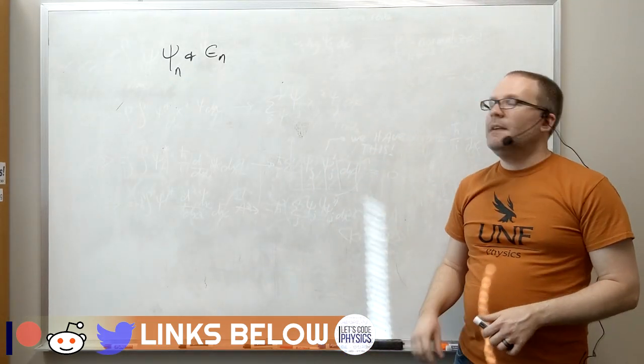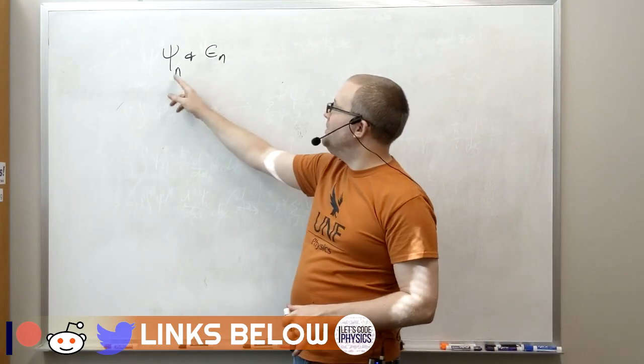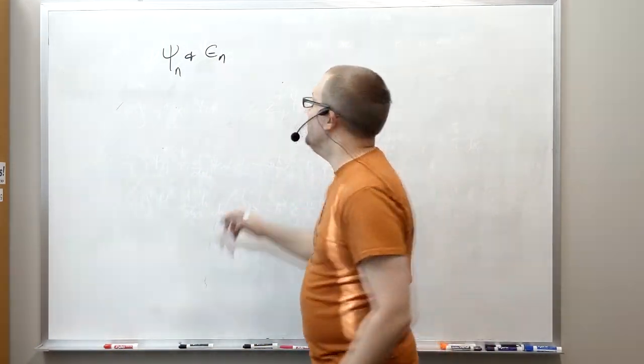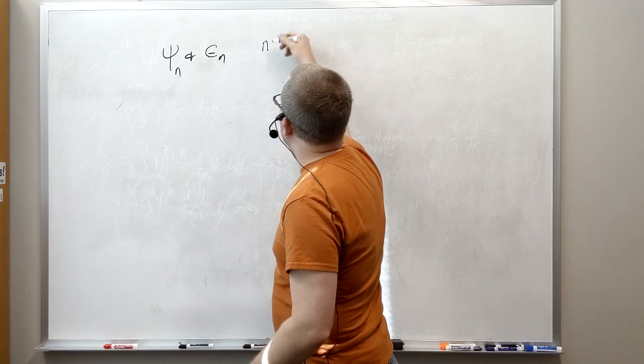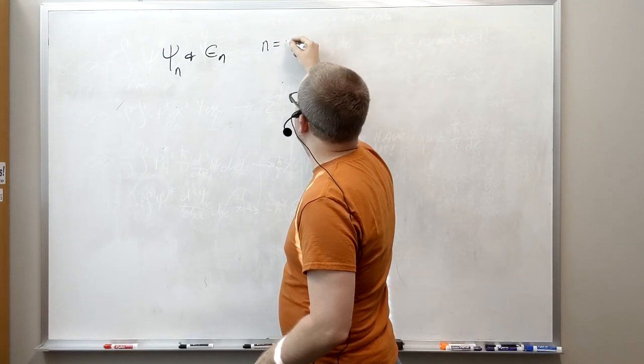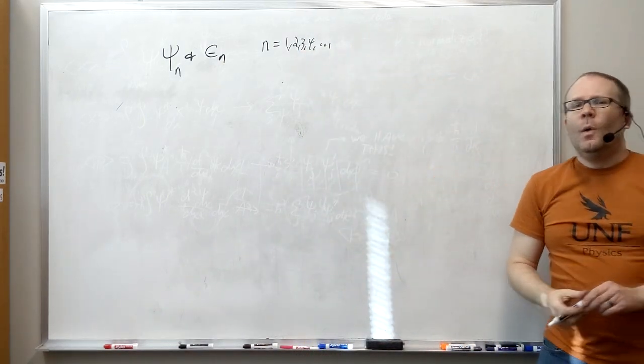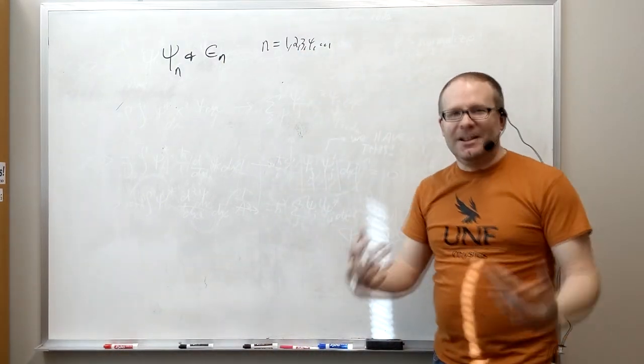So let's say you've been working with your shooting method code, and you've got a whole bunch of wave functions psi_n and a whole bunch of eigenvalues e_n. Again, n here is some subset of integers, maybe it's one, two, three, four, etc. It sometimes starts at zero, sometimes starts at one. What do you do with these things? What do they tell you?